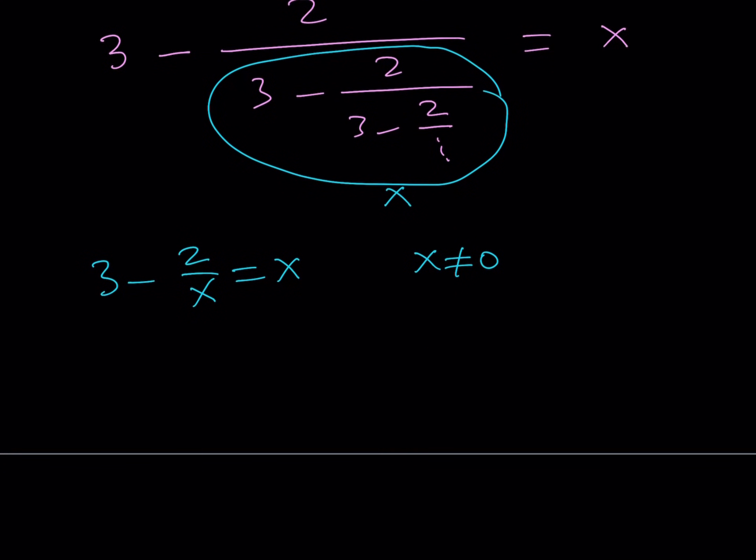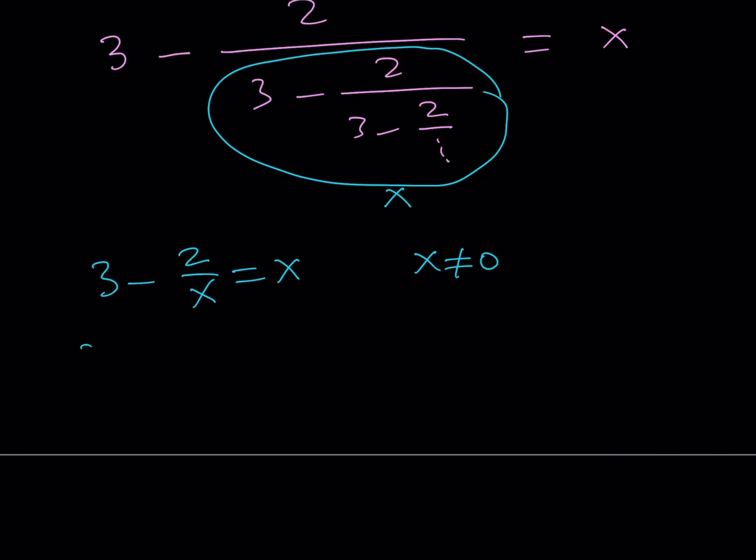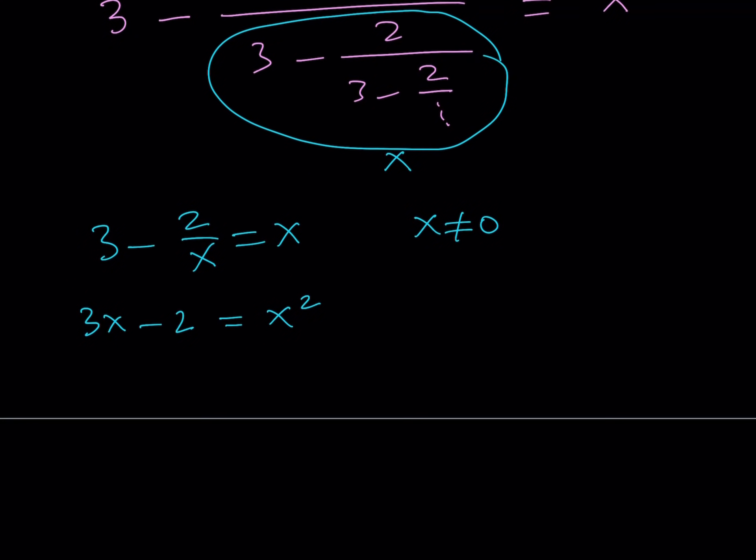x equals 0 doesn't satisfy this, obviously. So we can multiply everything by x. That's going to give me 3x minus 2 equals x squared. And if we put everything on the same side, then you will get something like this: x squared minus 3x plus 2 equals 0.